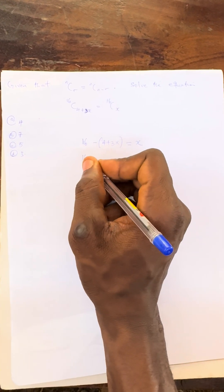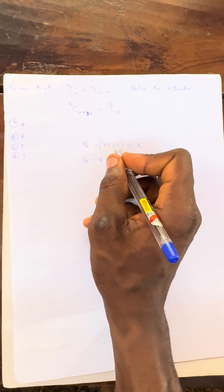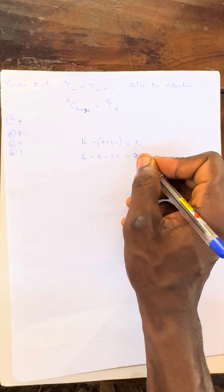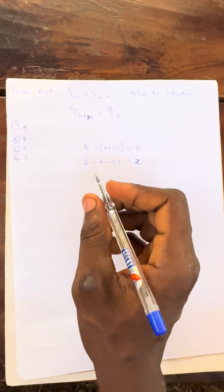Now let us open this bracket. I have 16 minus 4. The minus sign is equal to what? Minus 3x. Everything equals what? It will be equal to x.